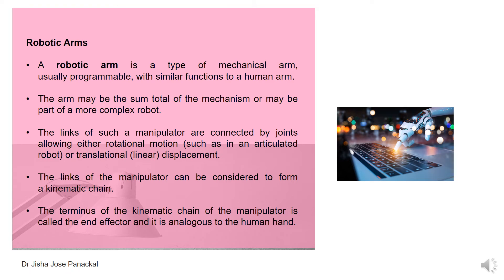The next output device is robotic arms, one of the most recently used output devices. It is a type of mechanical arm, usually programmable, with similar functions to a human arm. It can be part of a robot or a standalone device. The links of such a manipulator are connected by joints allowing either rotational motion or linear displacement. The links form a kinematic chain, and the terminal of that chain is called the end effector, which is analogous to a human hand.